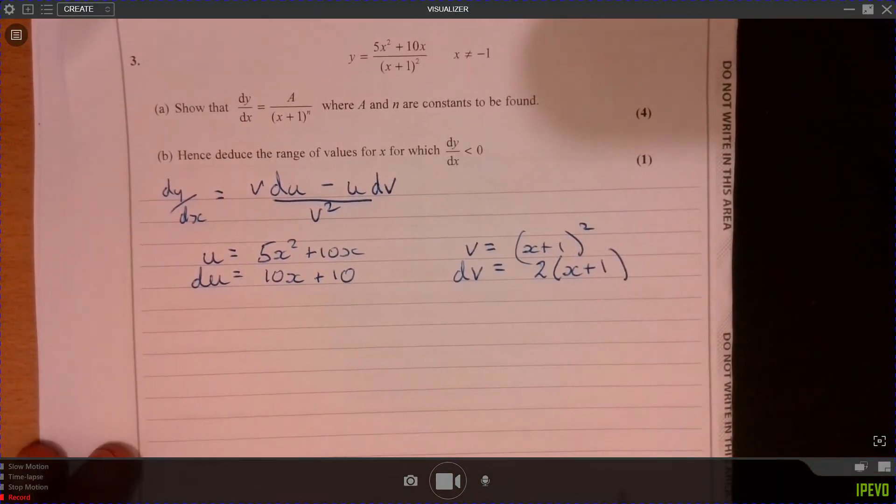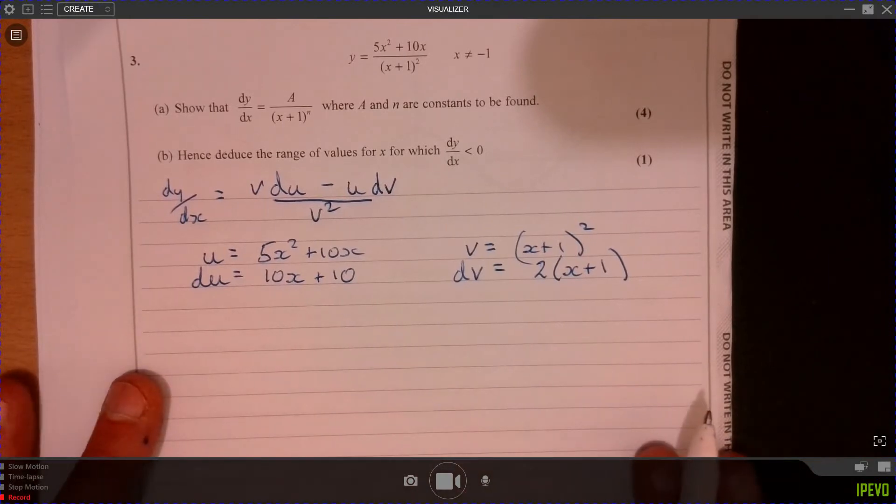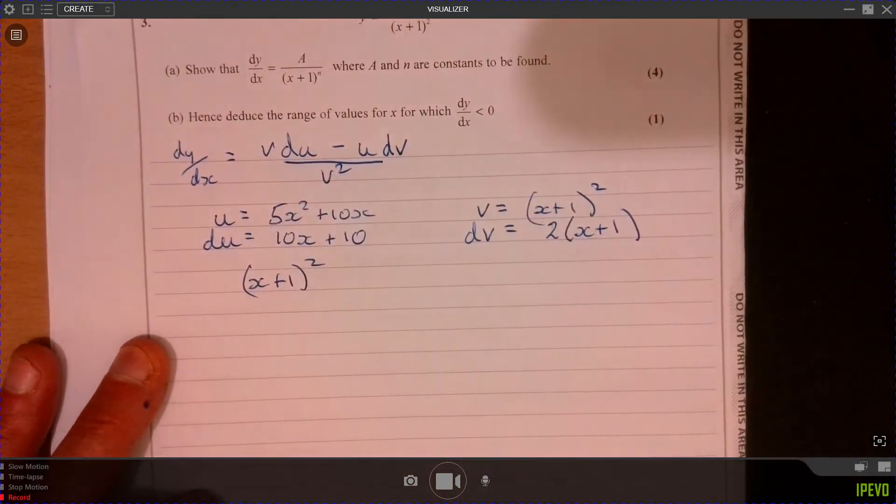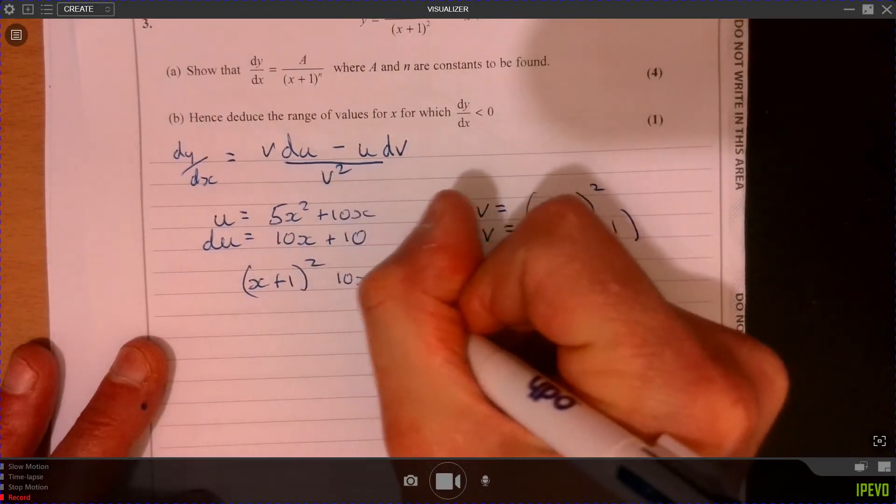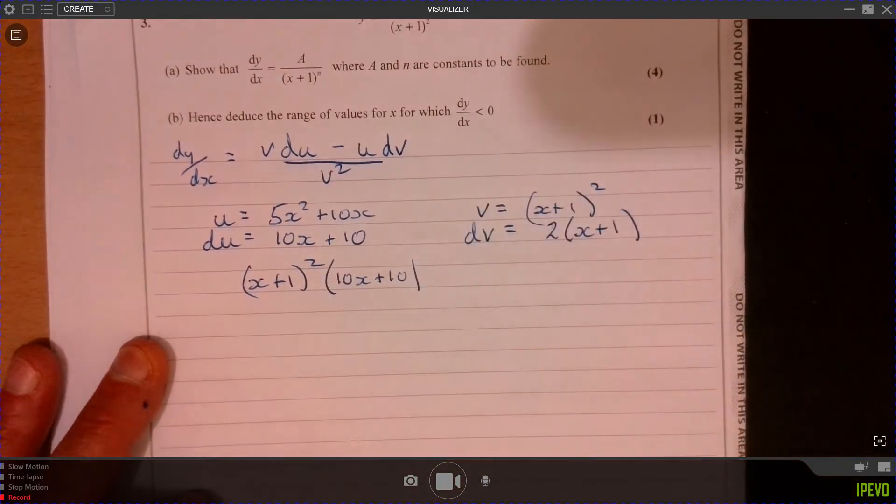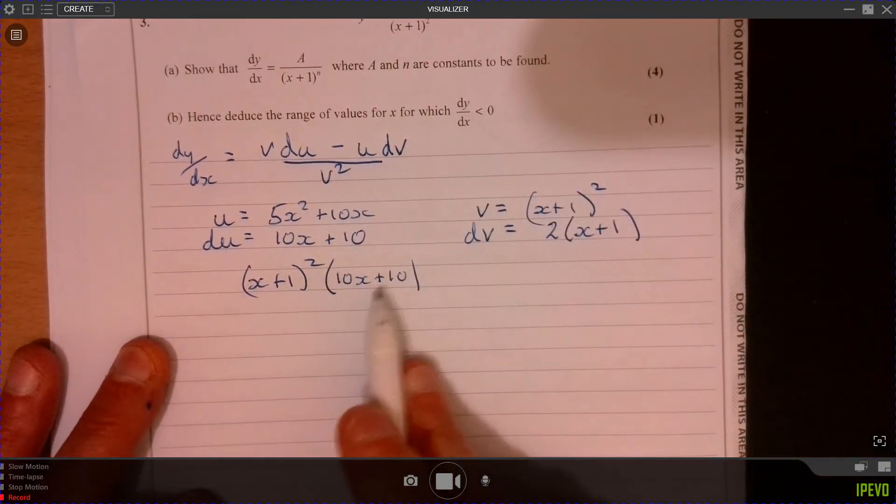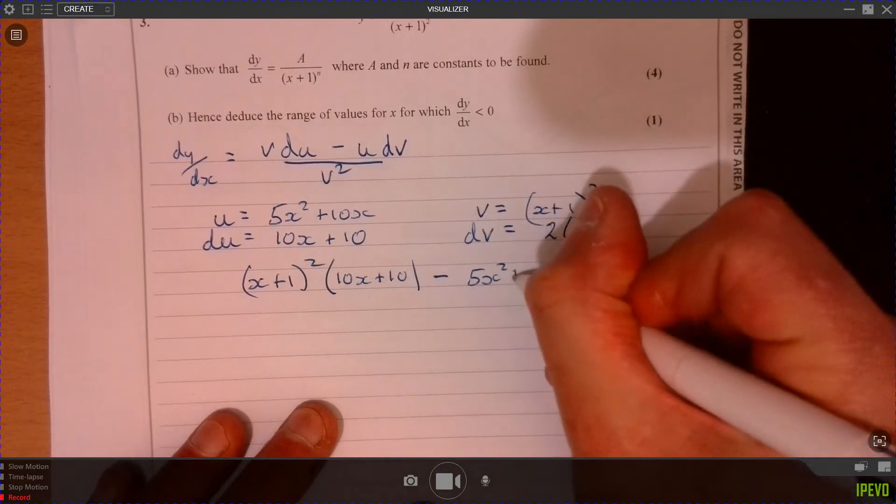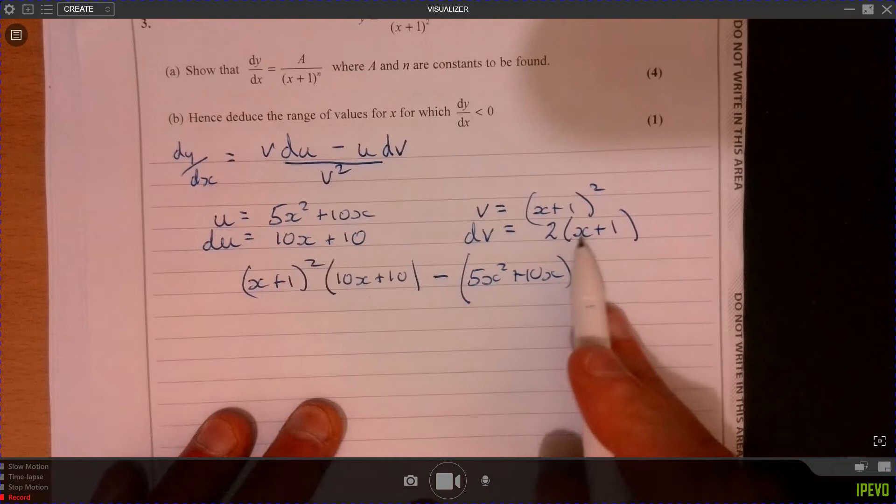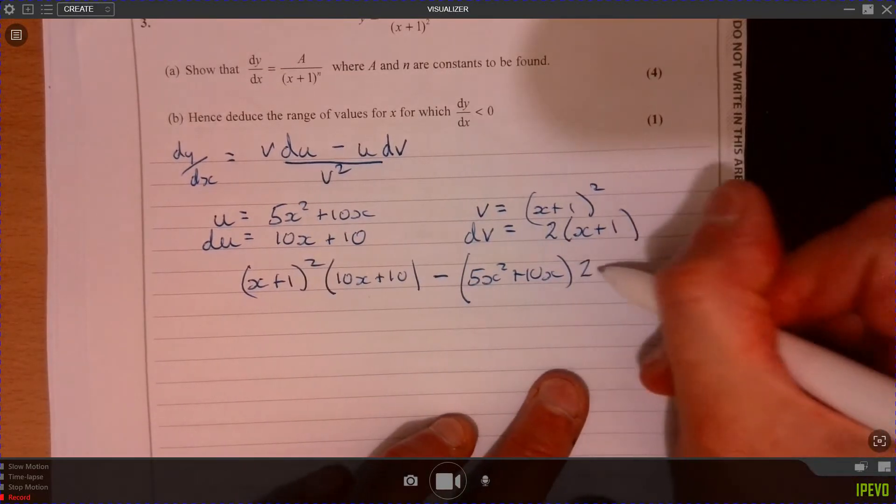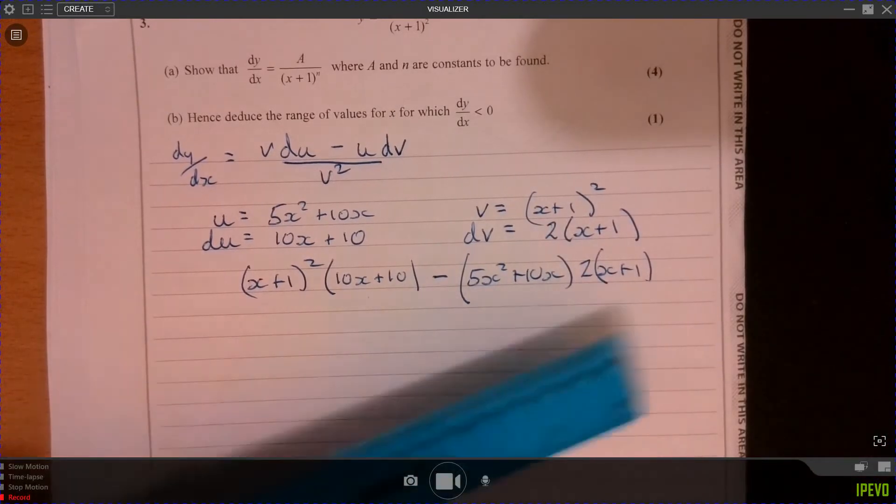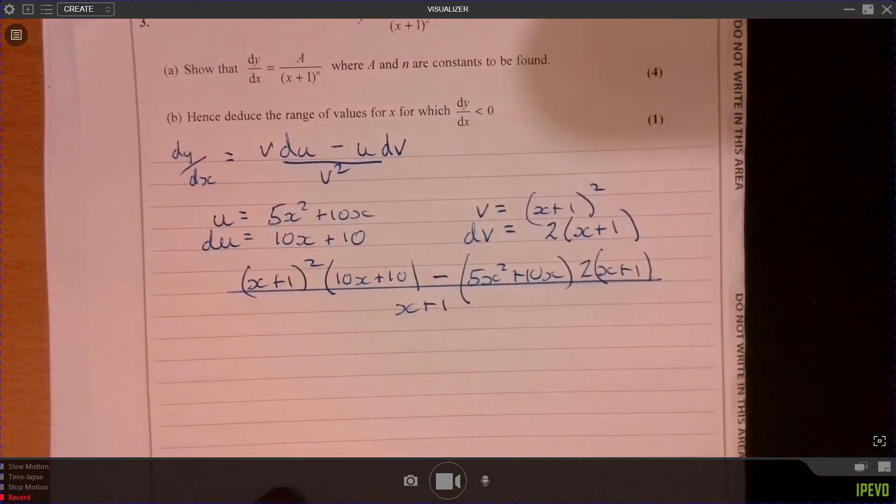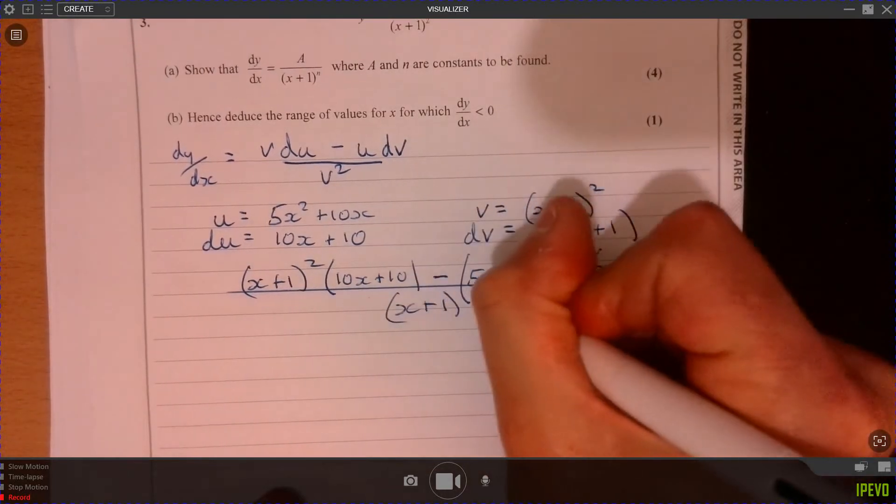We obviously could write 2x plus 2 if you prefer. Right. Let's just write the whole thing down in terms of dy over dx and see what we get to. So we've got x plus 1 squared. We've got 10x plus 10. So that's du. So that's v, du. And then we're going to take away. And then we've got 5x squared plus 10x. So that's u and then dv. And that's 2x plus 1. There we are. And all of that is over v squared. So that's x plus 1. So that's x plus 1 squared squared. So in other words, it's x plus 1 to the power of 4.